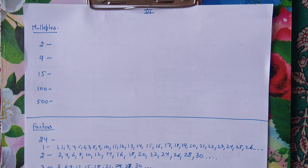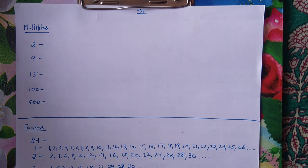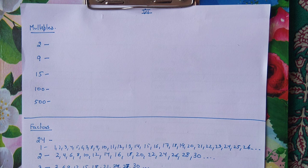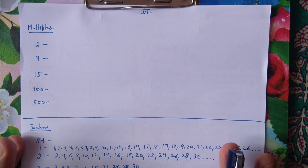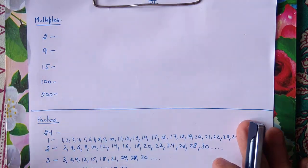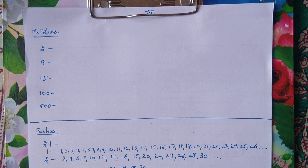Good morning class. Now after completing chapter 2, which was whole numbers, we start chapter 3 which is Playing with Numbers. Playing with Numbers has different concepts. We will explain the concepts, do exercises and accordingly finish the chapter correctly. The first concept is multiples and factors. I will teach you that and accordingly you will be able to do the first exercise which is 3.1.